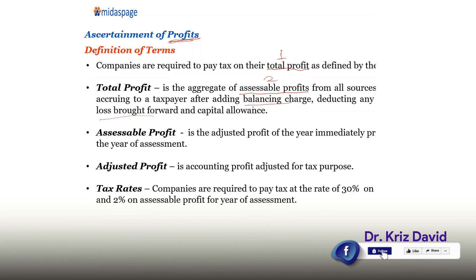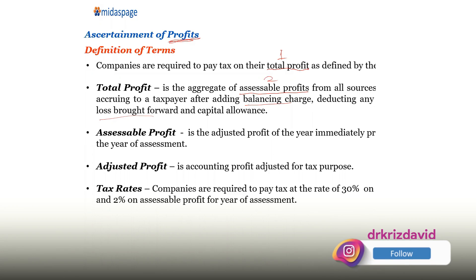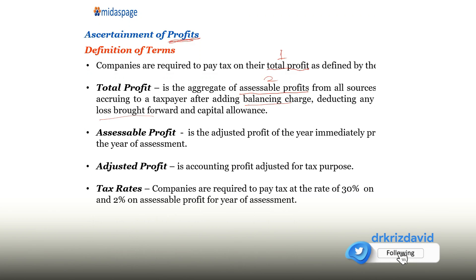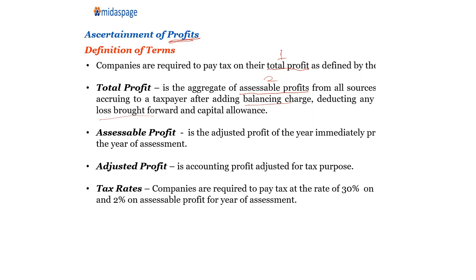Let's focus on the profits. The aggregate of assessable profits from all sources of income accruing to a taxpayer or a company — you aggregate them together. Then, after adding balancing charge, deducting all relief losses and capital allowance, you arrive at a total profit.